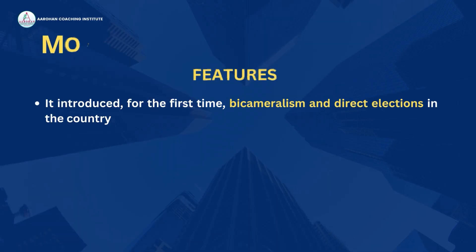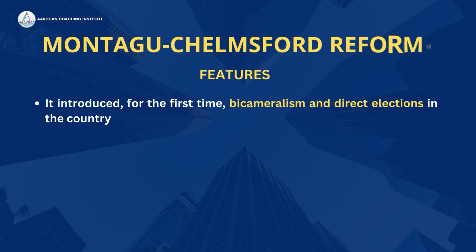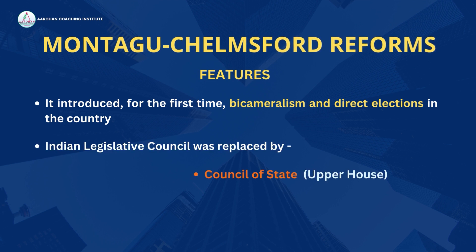It introduced bicameralism and direct elections in the country for the first time. The Indian Legislative Council was replaced by a bicameral legislature consisting of an upper house, i.e. a Council of State, and a lower house, which denotes the Legislative Assembly.